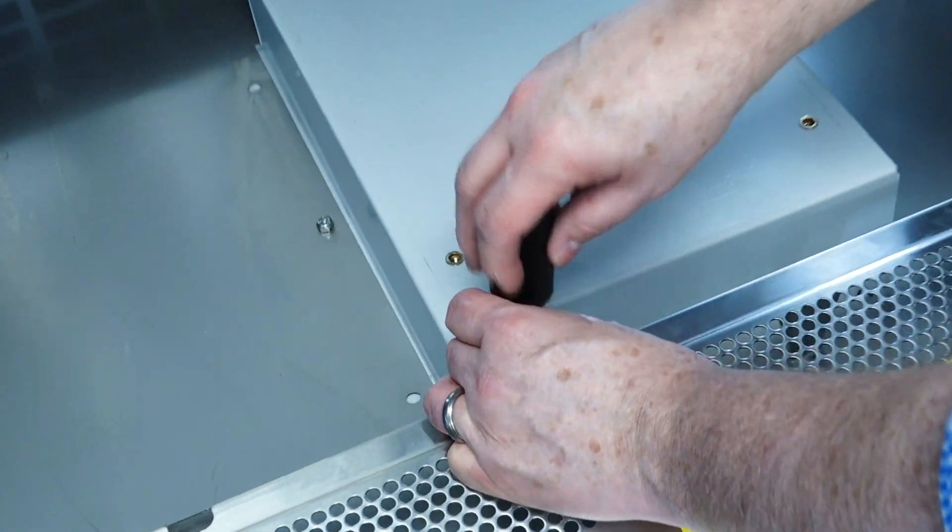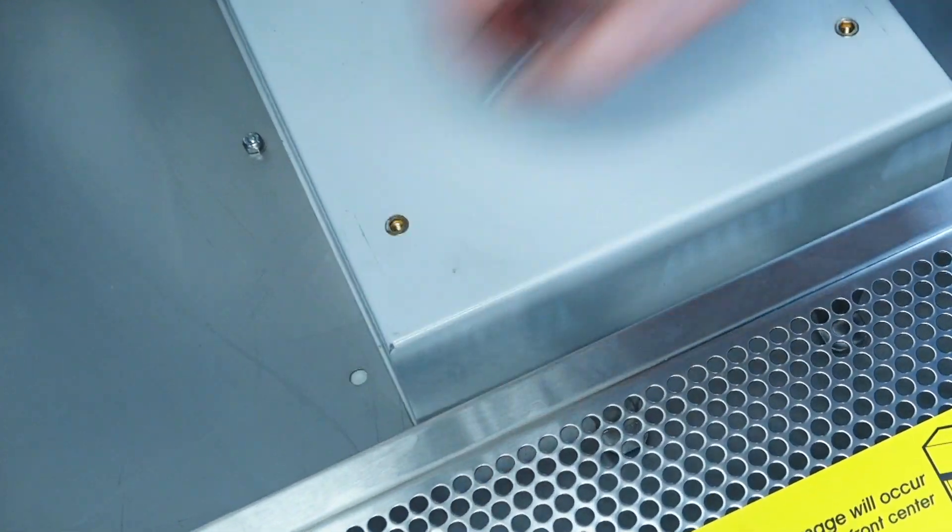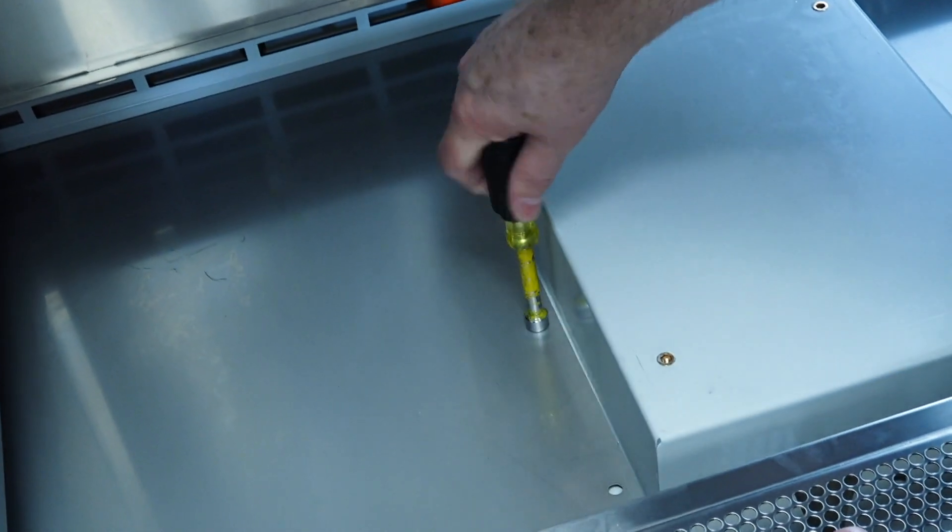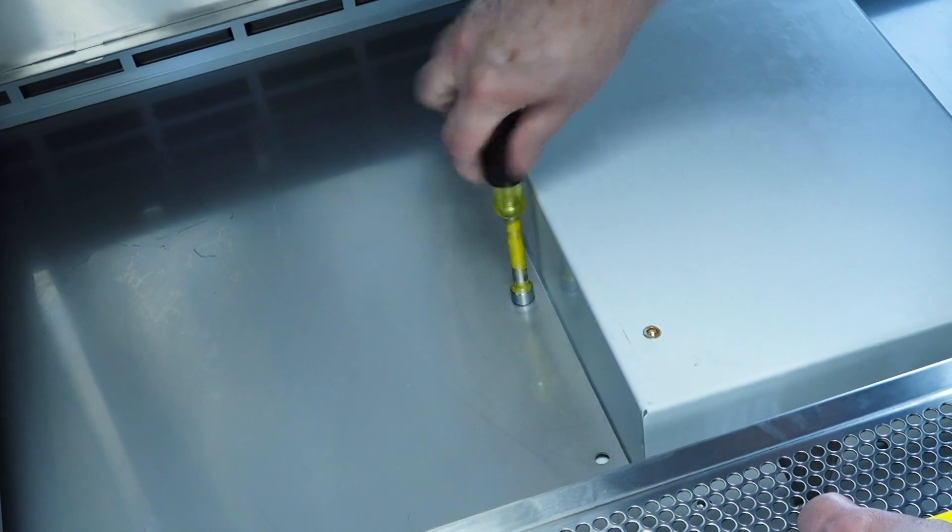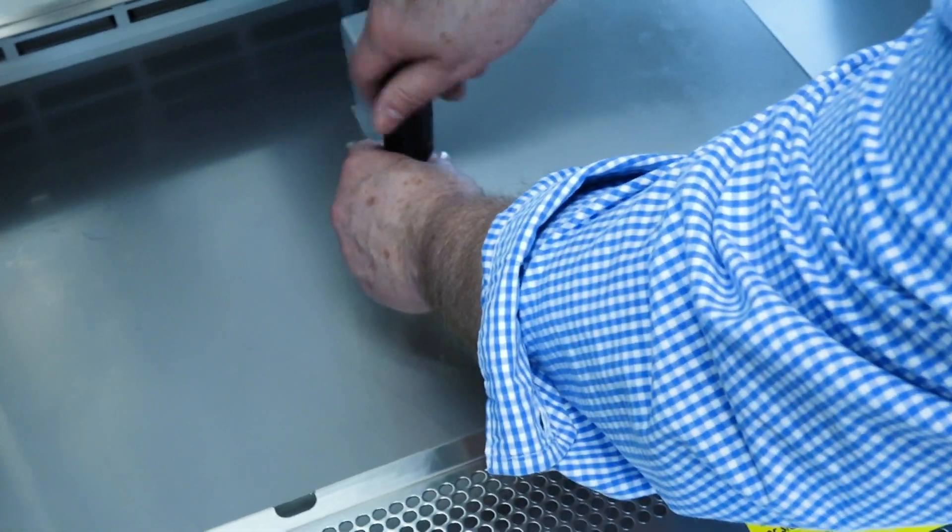Next, remove the shipping support by loosening four nuts. A three-eighths inch nut driver or wrench is required for this step. The shipping support and securing nuts can be discarded at this point.